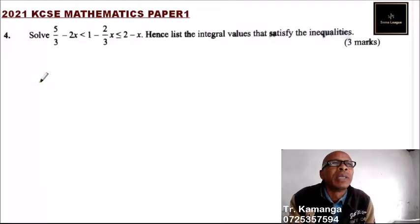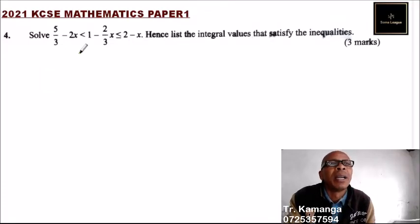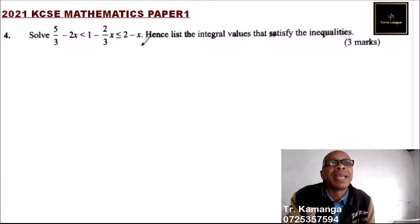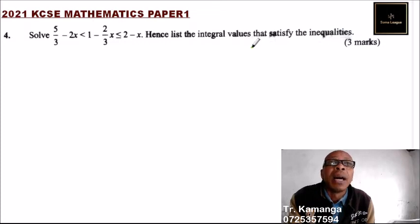Question number 4. We have 5 over 3 minus 2x less than 1 minus 2 over 3x less than or equals to 2 minus x. Hence, list the integral values that satisfy the inequality.